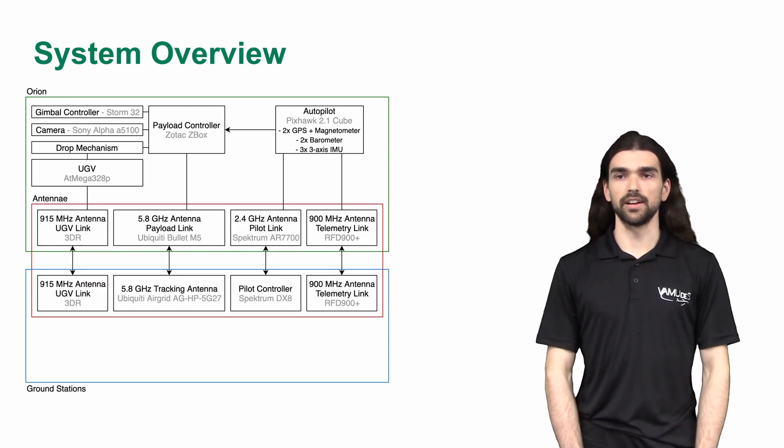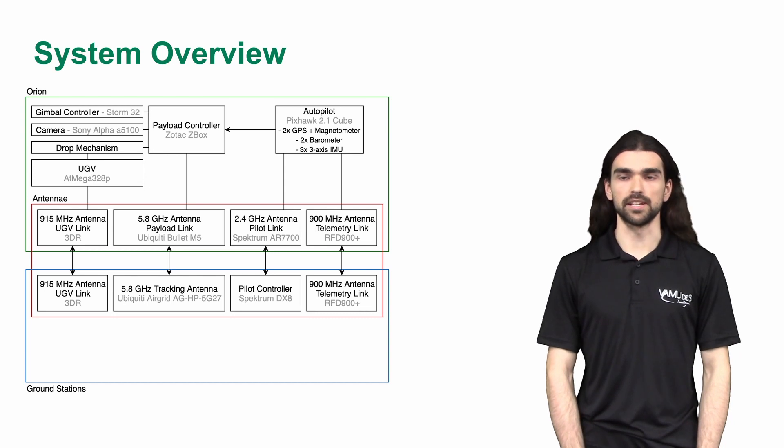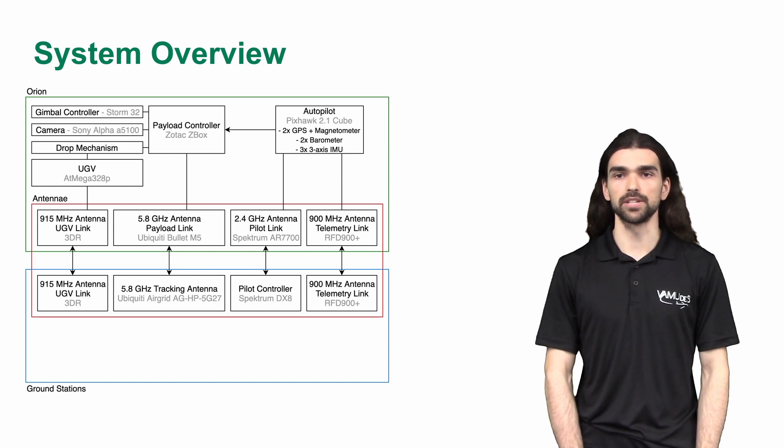These systems are connected with four links to the ground control station. The Autopilot uses a 900 MHz RFD900 Plus for telemetry and control, as well as a 2.4 GHz Spectrum antenna for the safety pilot. The Payload Controller uses a 5.8 GHz omnidirectional Wi-Fi antenna and the UGV uses a 900 MHz 3DR antenna.